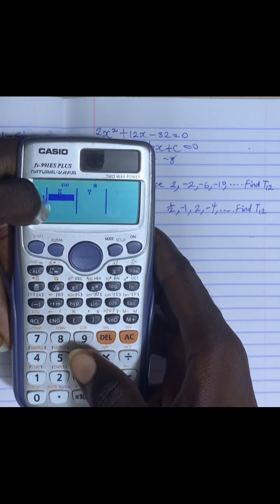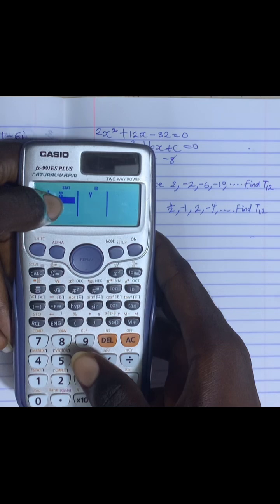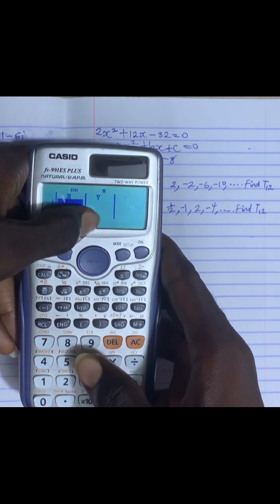Now, X means the number term, the nth term. Y means the value of each term.